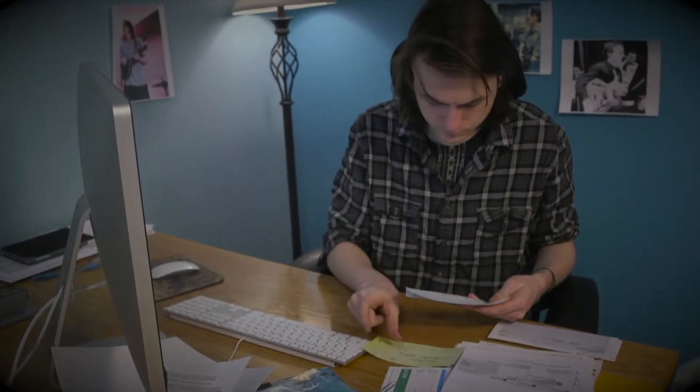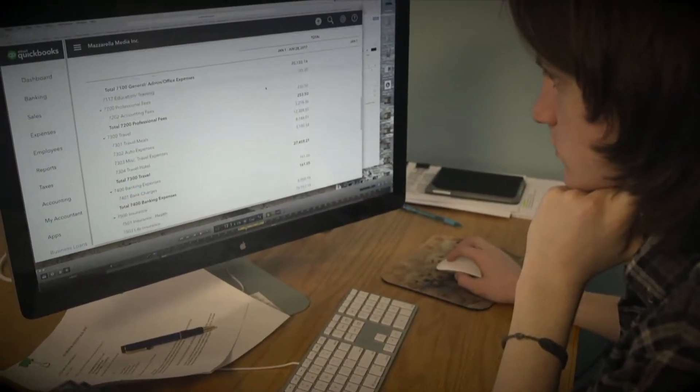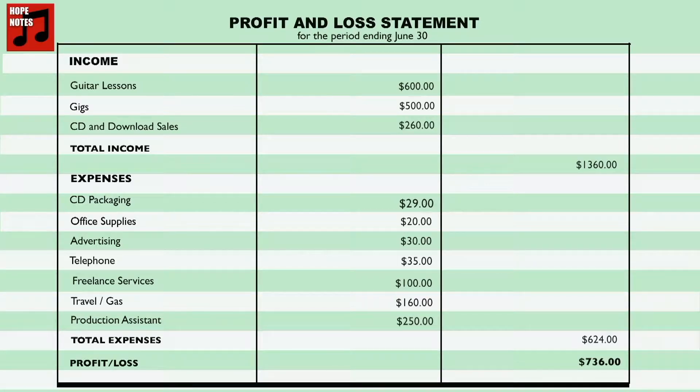After six months, Anthony's business is going well. His profit and loss statements show that he's earning a small profit each month. A profit and loss statement, also called a statement of earnings or income statement, is a report that shows the amount of money earned by business activities and expenses, the amounts paid in the course of a business operation. A profit and loss statement summarizes financial activity over a period of time, typically a month, quarter, or a year. It shows the revenue, the amount of money an organization has taken in, and expenses, how much money it has spent during the specific time period.